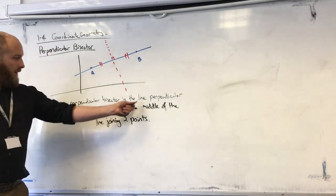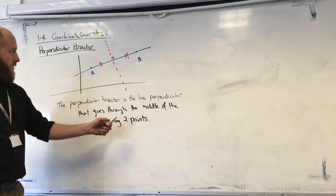So the perpendicular bisector is going to cut this into two evenly lengthed parts at a right angle. So there you go, the perpendicular bisector is the line perpendicular that goes through the middle of the line joining two points.